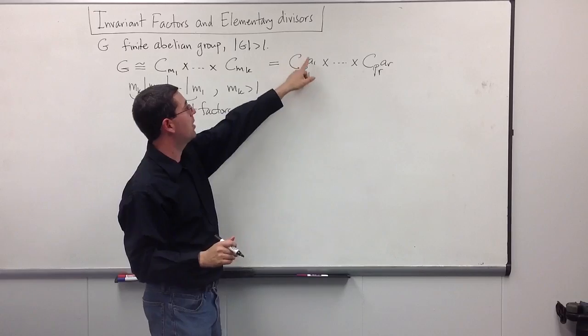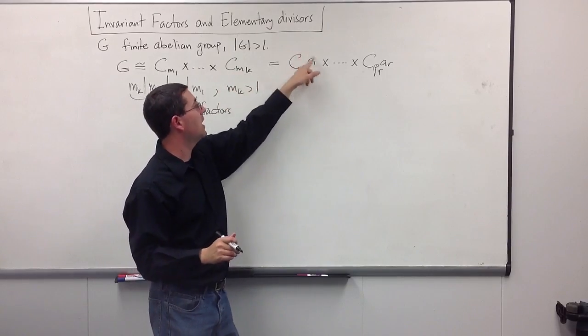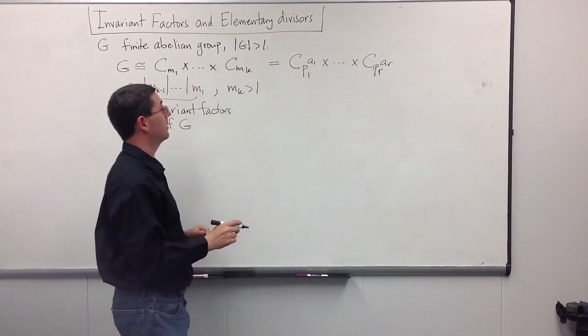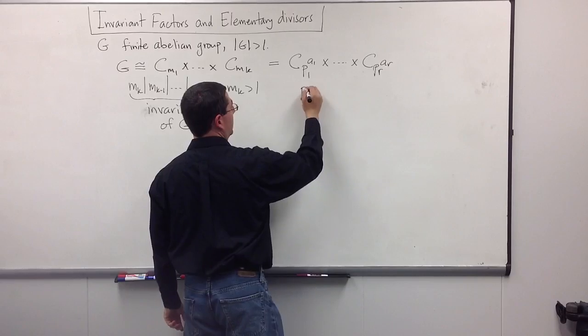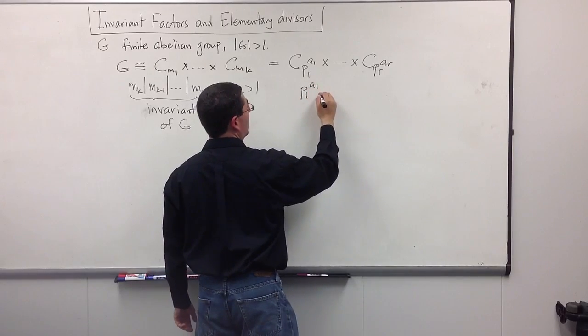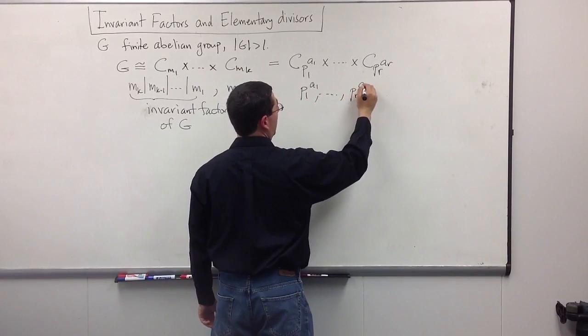But every time a prime does show up within one of these, we can ask how many times it does, and that's where you get these exponents. And so, the numbers that you get here, P1 to the A1 through PR to the AR, those are, again,